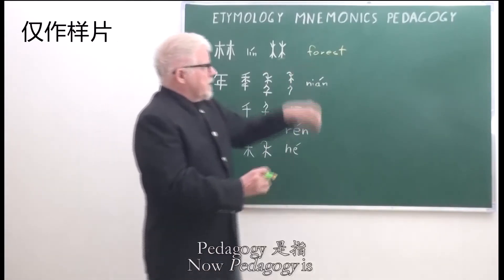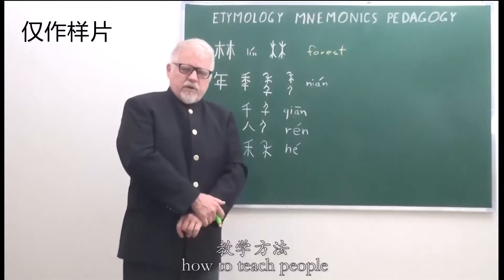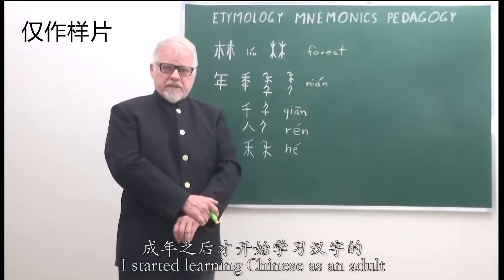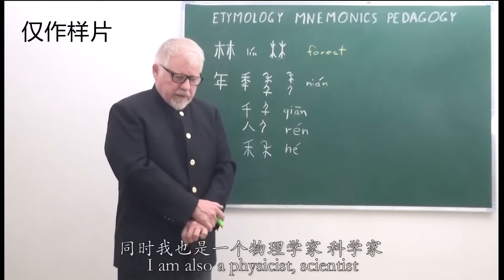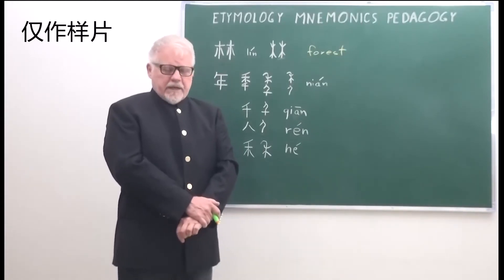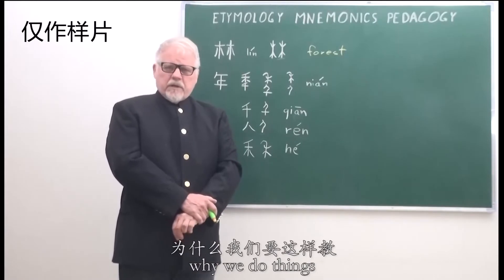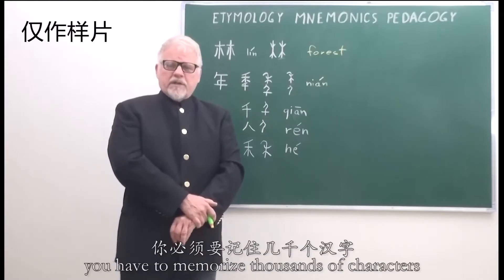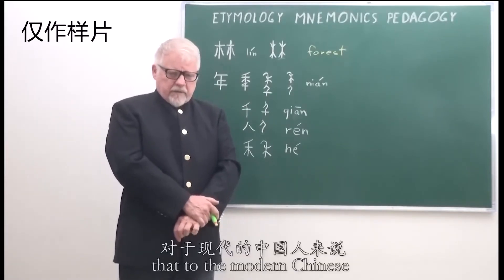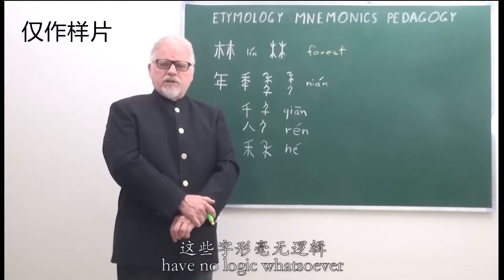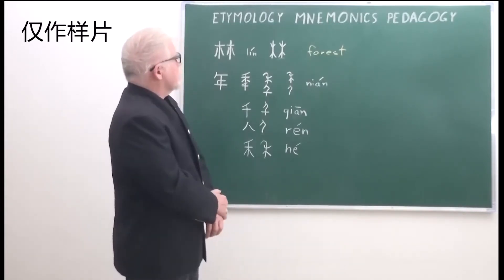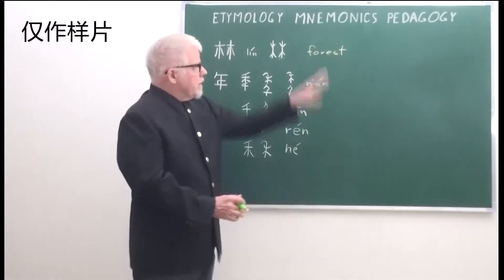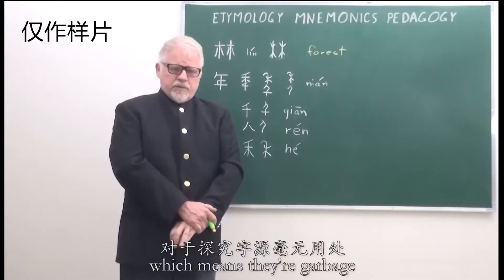Pedagogy is how to teach people, and we have different kinds of people. I'm a foreigner — I started learning Chinese as an adult. I am also a physicist, a scientist, and so I like to know why we do things, why we write characters. If you're going to be literate in Chinese, you have to memorize thousands of characters that, to the modern Chinese, have no logic whatsoever. So I tried to find etymology books, but seventy-five percent of them are mnemonics, which means they're garbage.